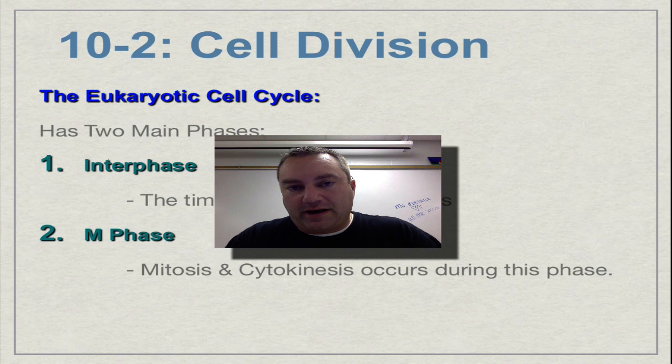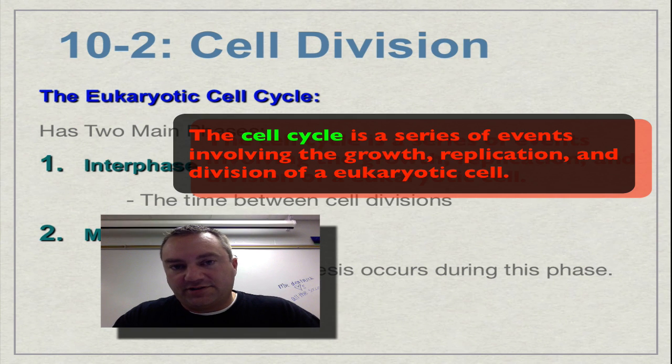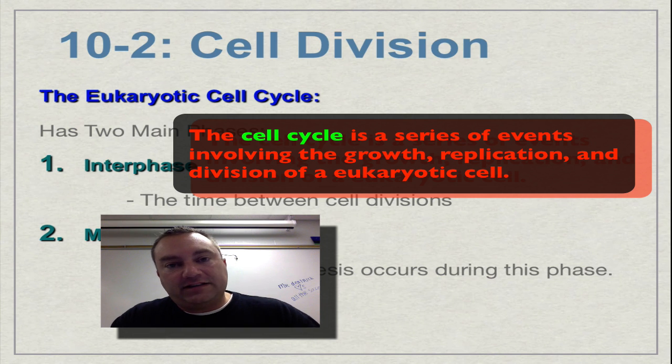Now you're going to see a graphic pop up in your screen with a definition of the cell cycle. And it's basically defined like this. It's the series of events of cell growth, replication, and finally cell division.